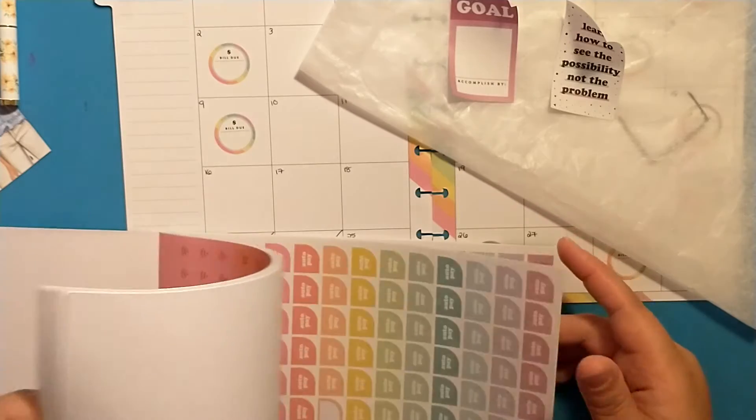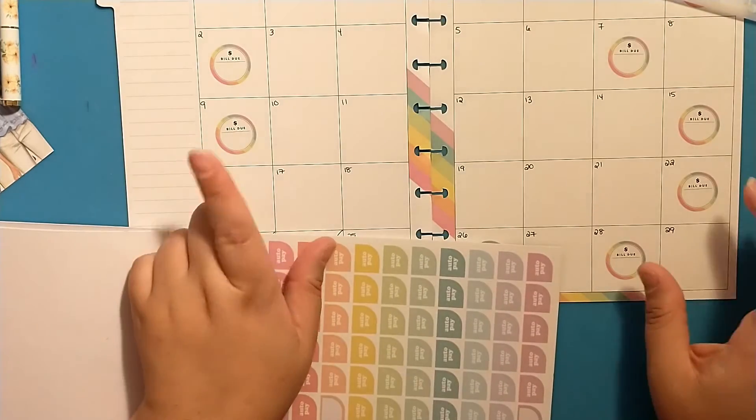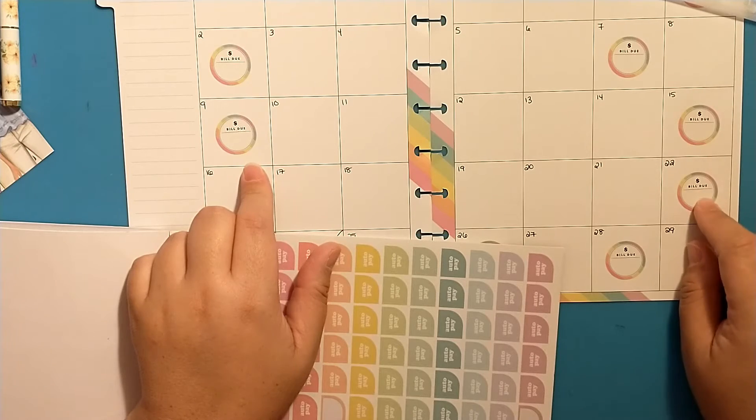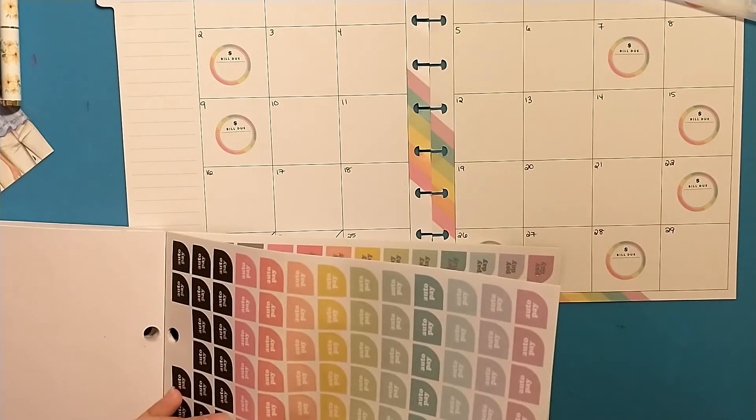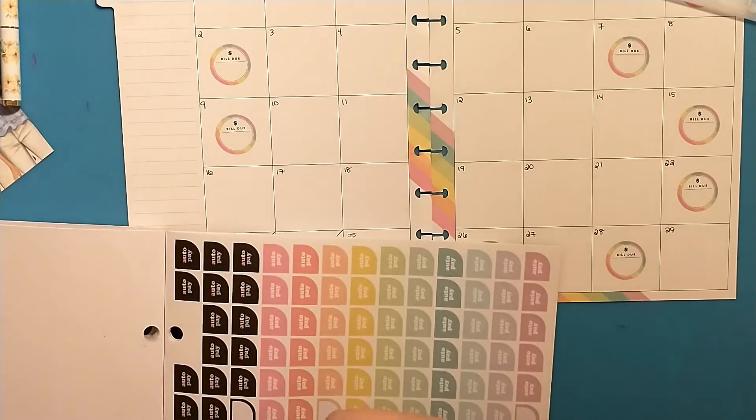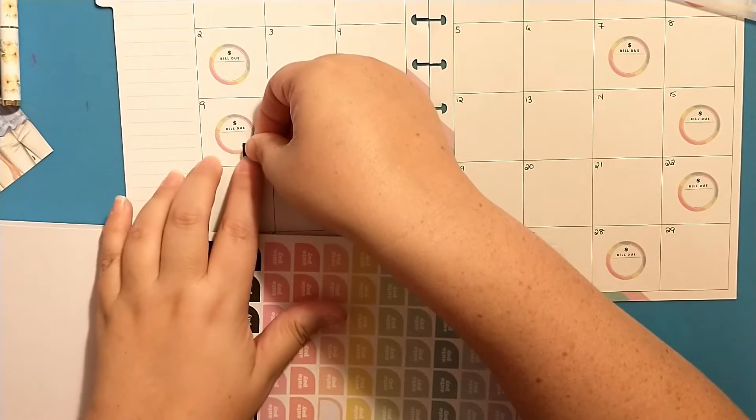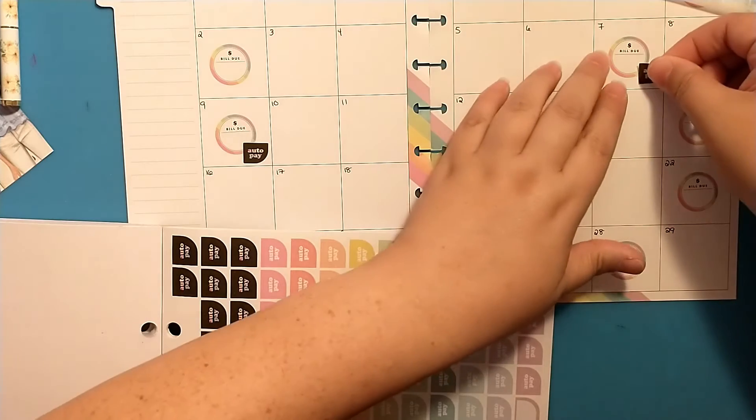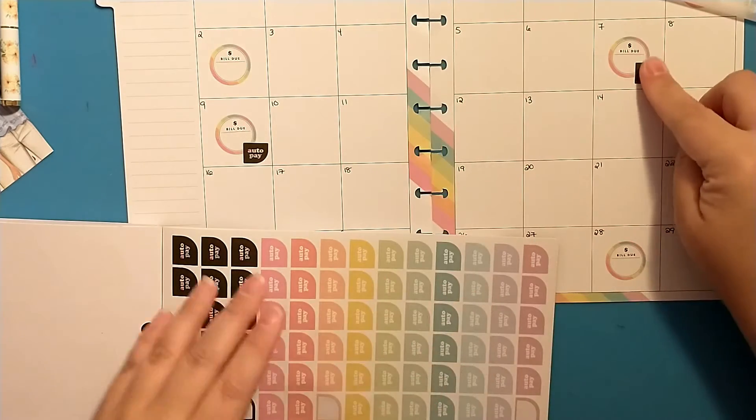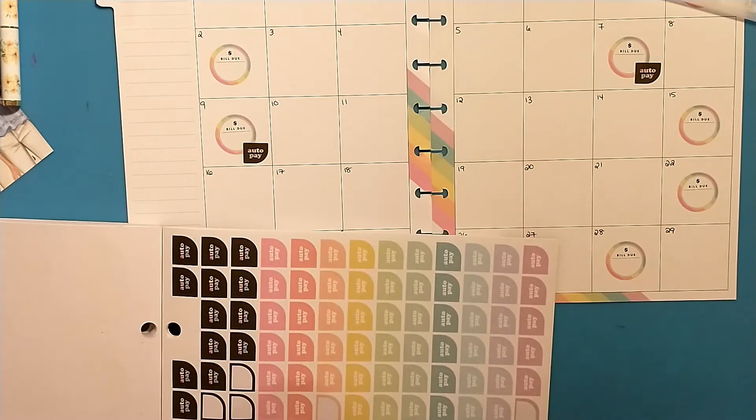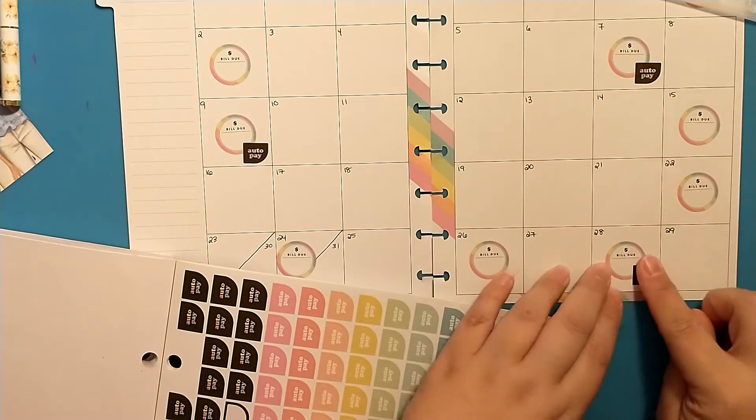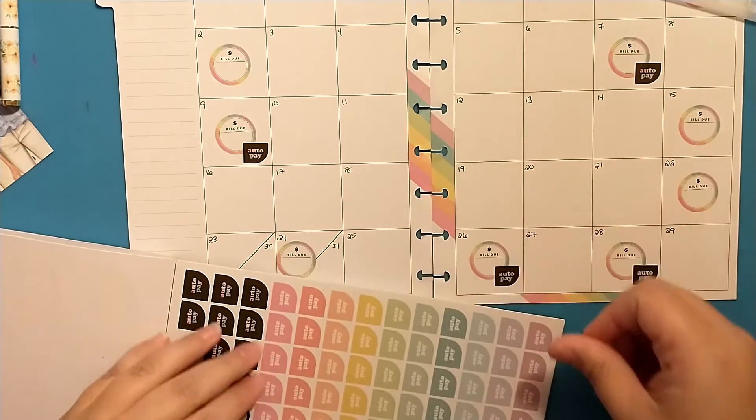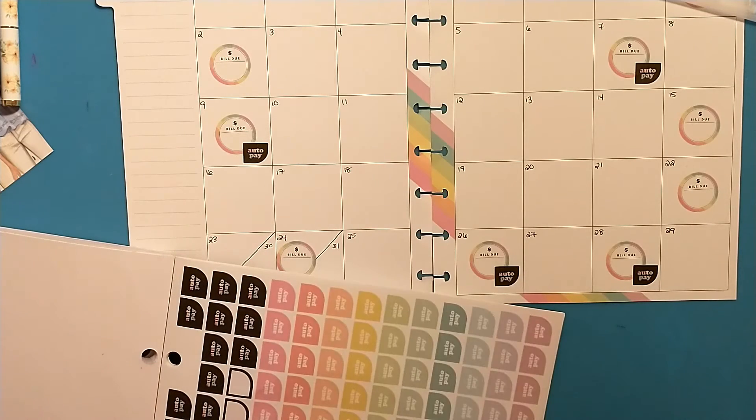And we have these auto pays. So for things like this bill, my Cricket, my HBO, those all automatically come out. So I could take these auto pay stickers and put this so I don't have to actually pay this, it's going to be automatically deducted from my account. So as a reminder, I don't always do this every month, but as a reminder. And then my phone. Most of my bills just automatically come out from my account. Then we have my dental and we have one more which is HBO.